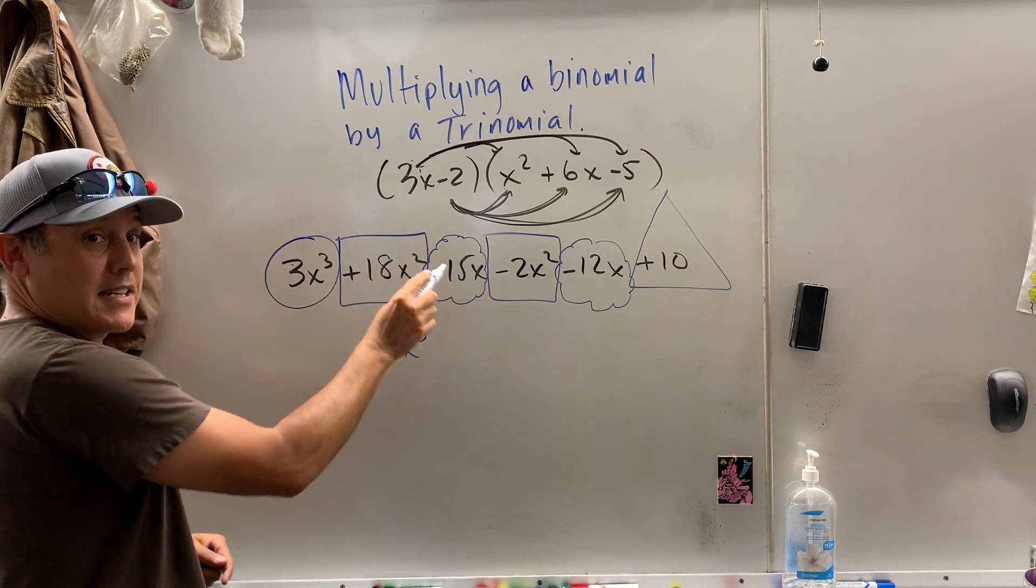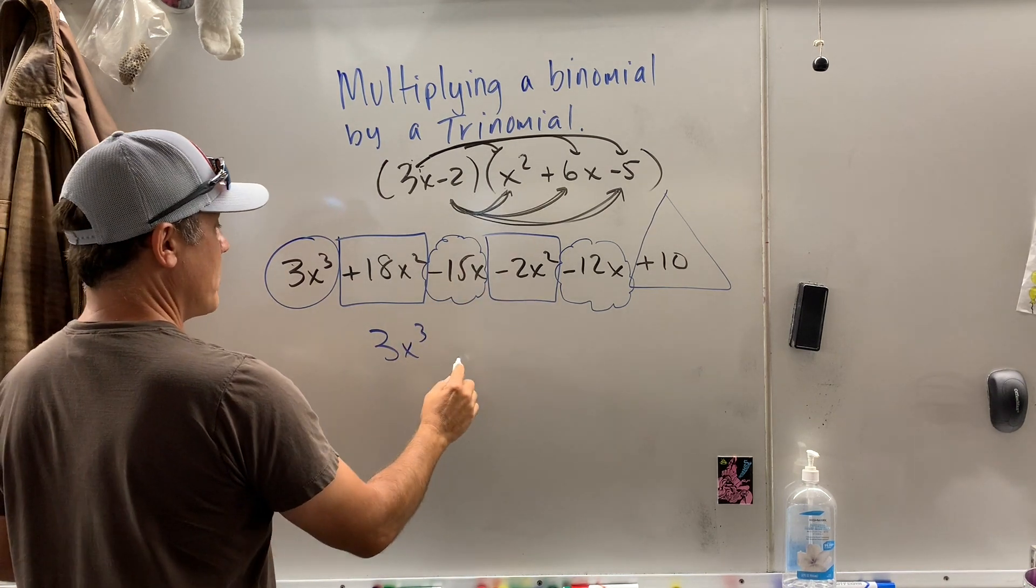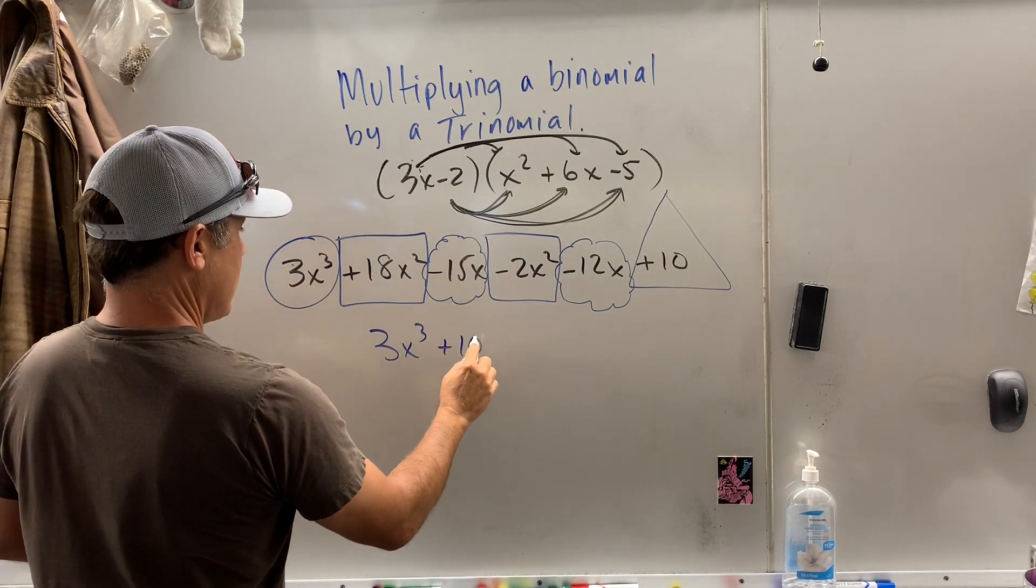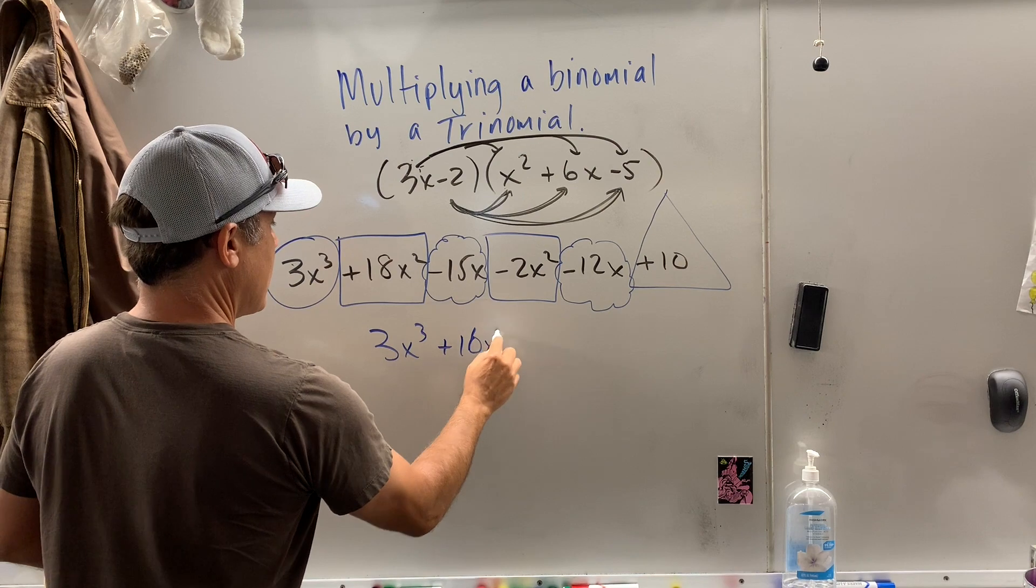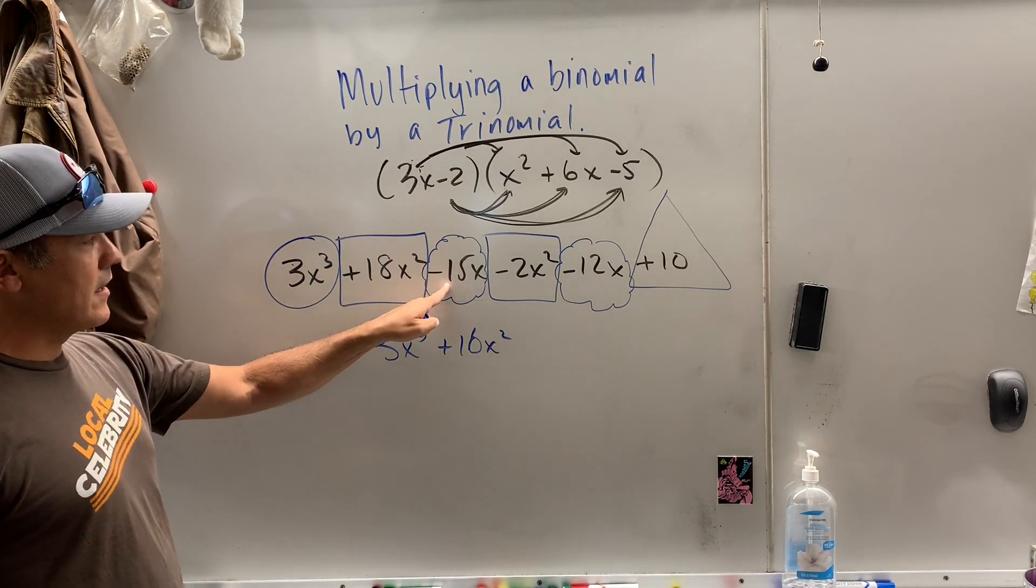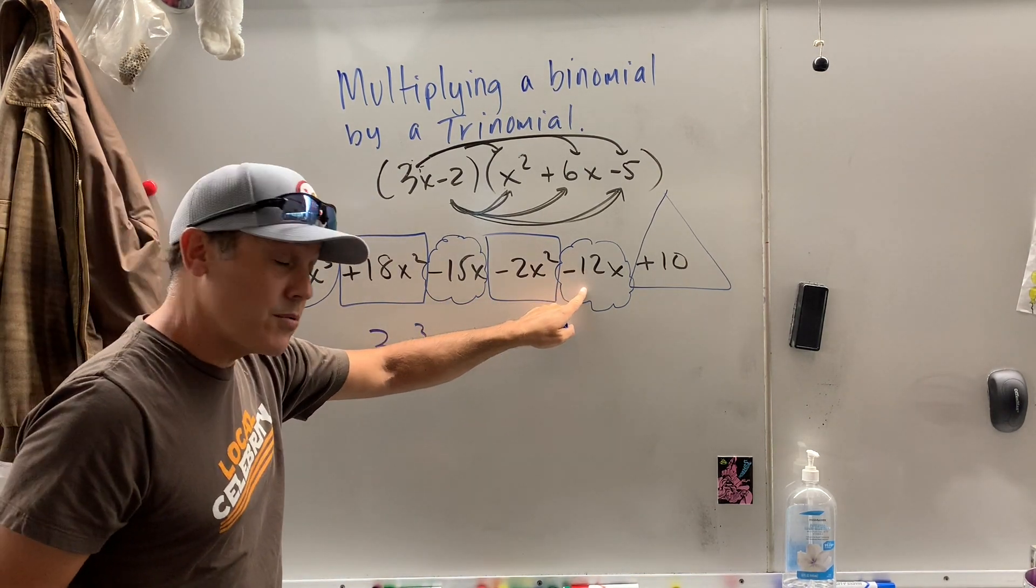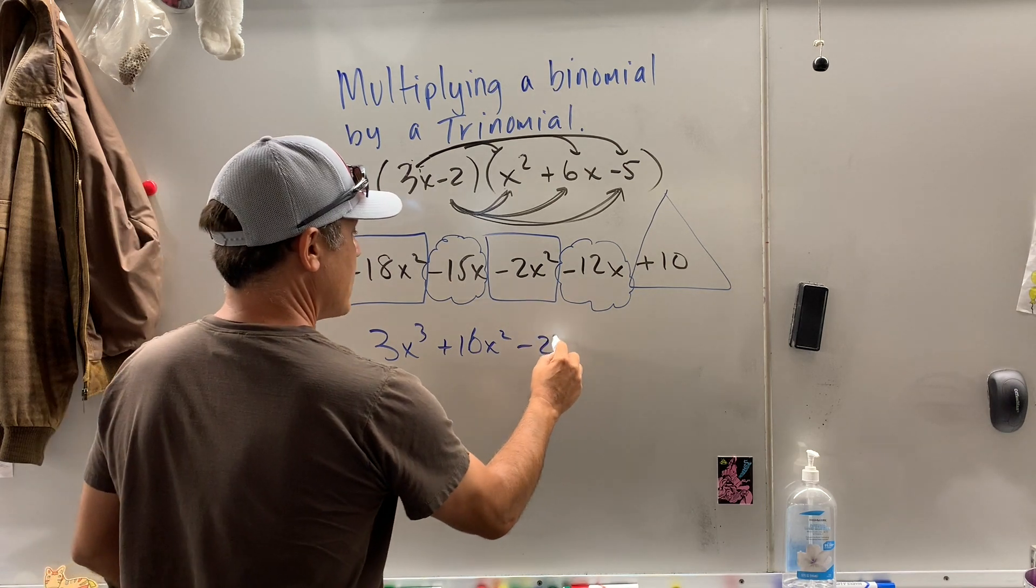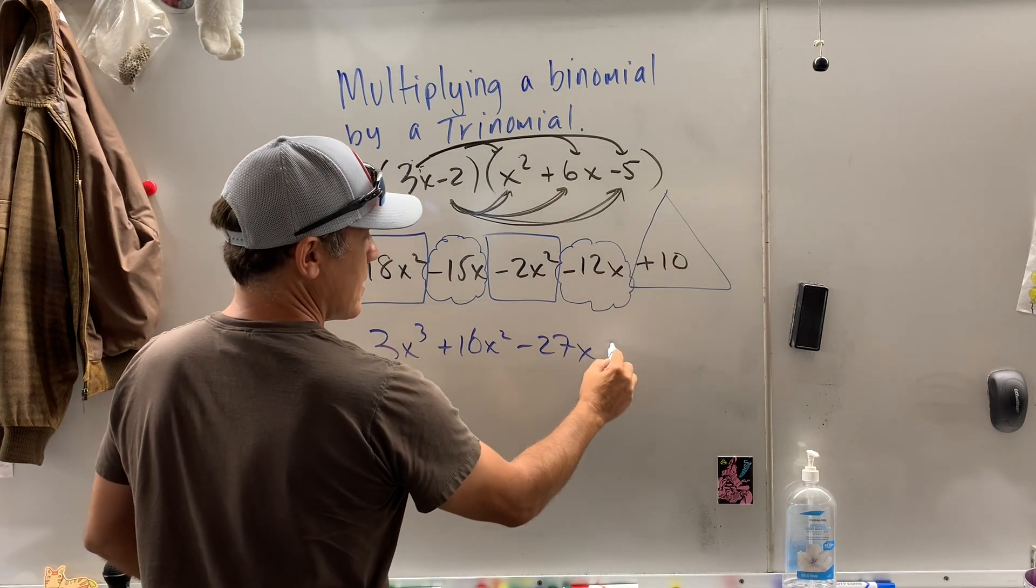My boxes: if I have 18x squared, take away 2x squared, that is 16x squared. And then I lost 15x, I lost 12 more x's, I lost 27x, and there's nothing to combine there.